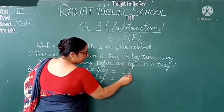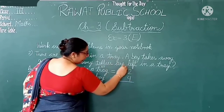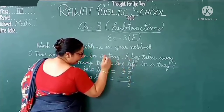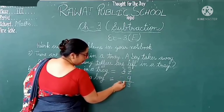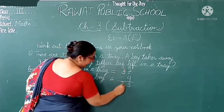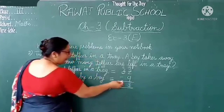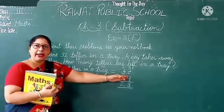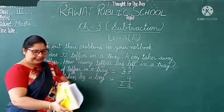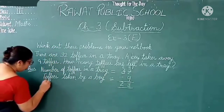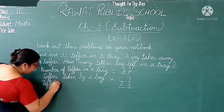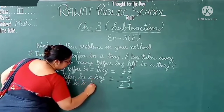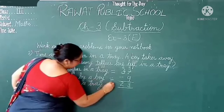2 is smaller than 9, so we take one carry from 3. Here it is 2 and this becomes 12. 12 minus 9 is equal to 3. There is no number below the 2, so 2 stays as it is. So how many toffees are left in the tray? 23 toffees. Total toffees 32, toffees taken by the boy 9, so 32 minus 9 is equal to 23. Toffees left in the tray is equal to 23.